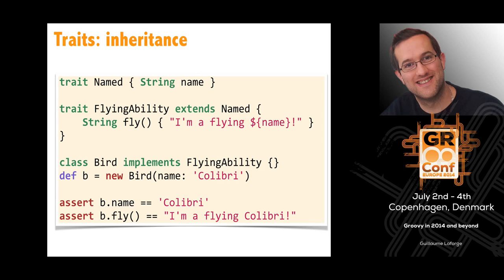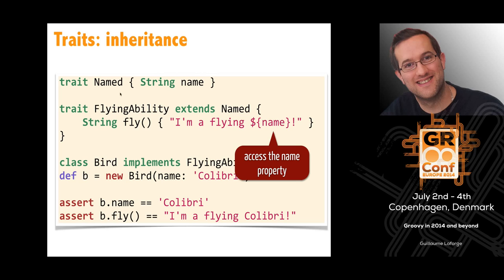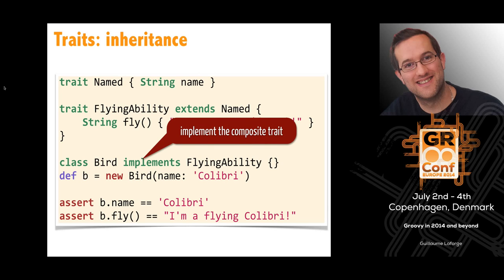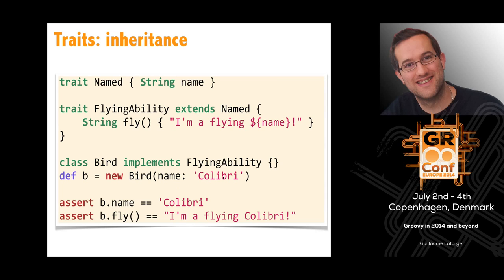You can also do trait inheritance. My FlyingAbility trait extends the Named trait: 'trait FlyingAbility extends Named'. In the updated fly method I can access the name property coming from the parent trait. Then you implement that composite trait, so you inherit from both Named and FlyingAbility. You get the named-argument constructor, can access the name property, and still have the fly method — you mix the two.